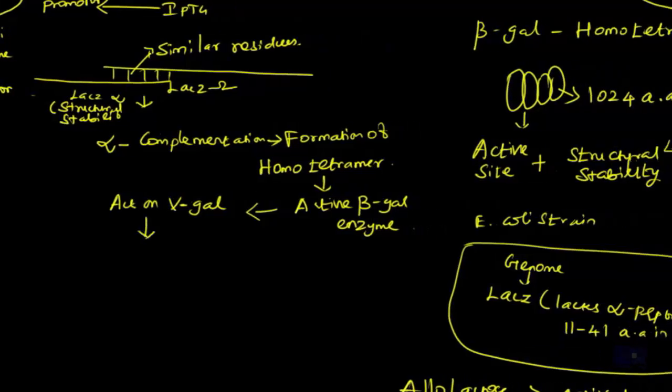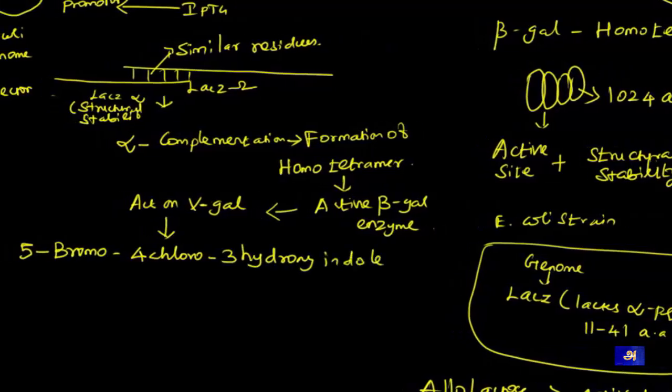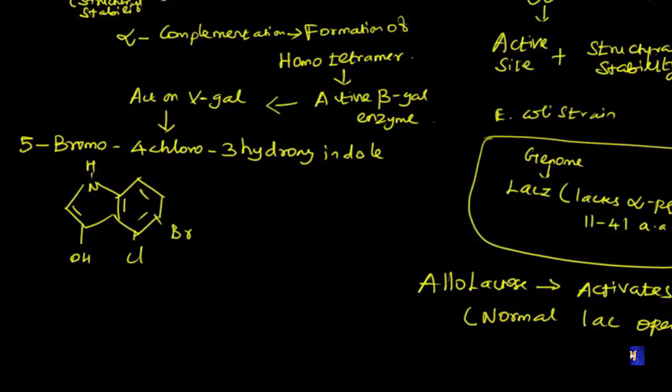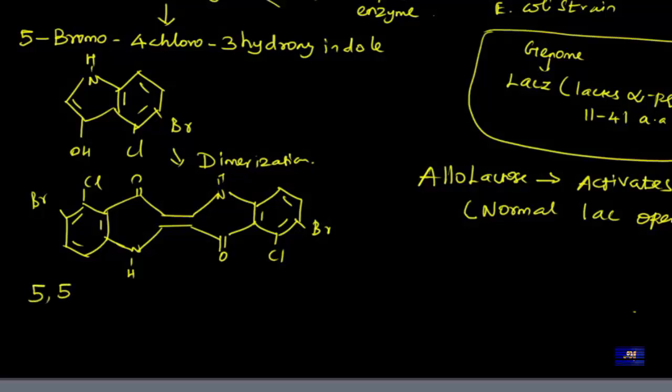This homotetramer is a stable structure, and this homotetramer will activate beta-galactosidase enzyme, which further acts on X-gal. X-gal is nothing but an alternative form of lactose - an analog of lactose. This X-gal will form a dimer, and this dimer is responsible for formation of blue color.